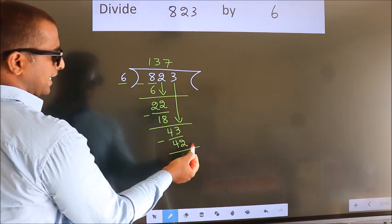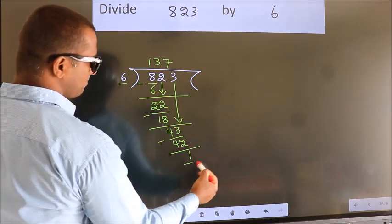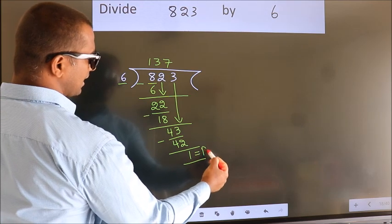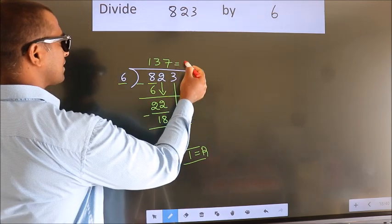No more numbers to bring it down. So we stop here. This is our remainder. This is our quotient.